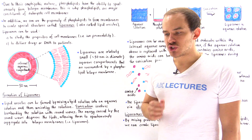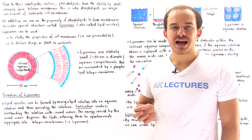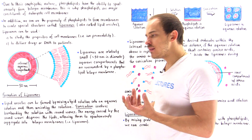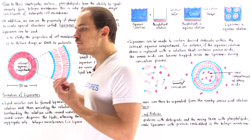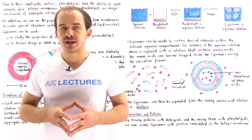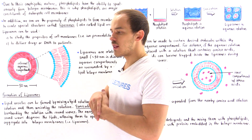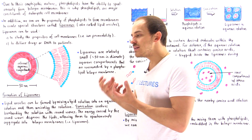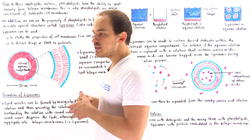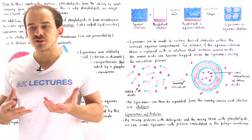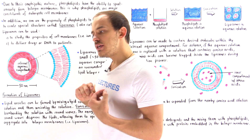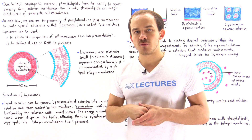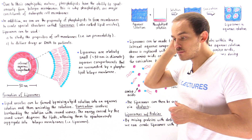Phospholipid molecules are amphipathic, and what that means is they have the natural propensity to form bilayer membranes, as we discussed in the previous lecture. We can actually utilize their propensity to form these bilayers to create specialized lipid vesicles we call liposomes.